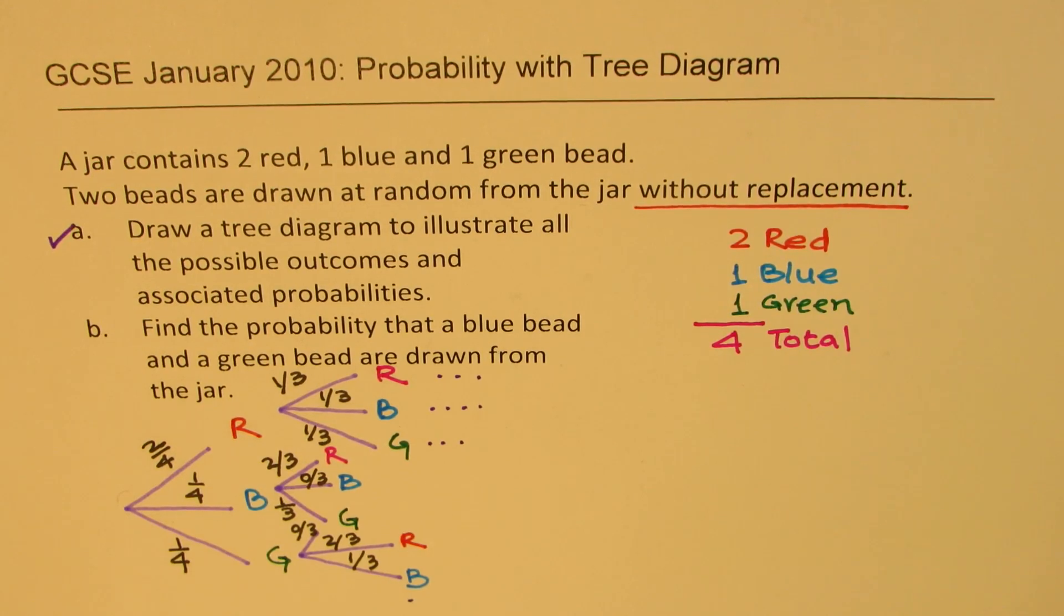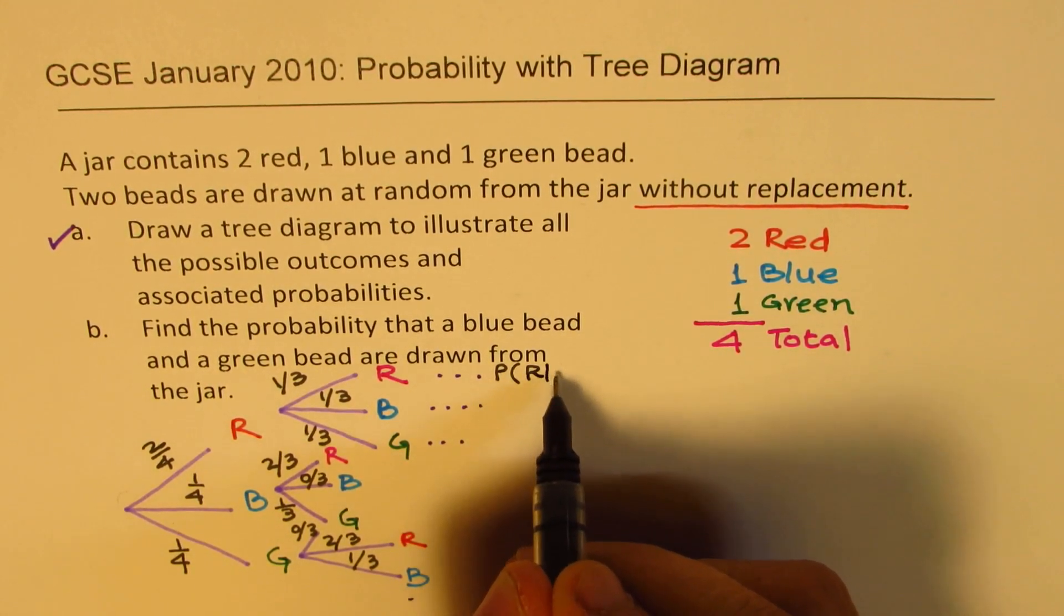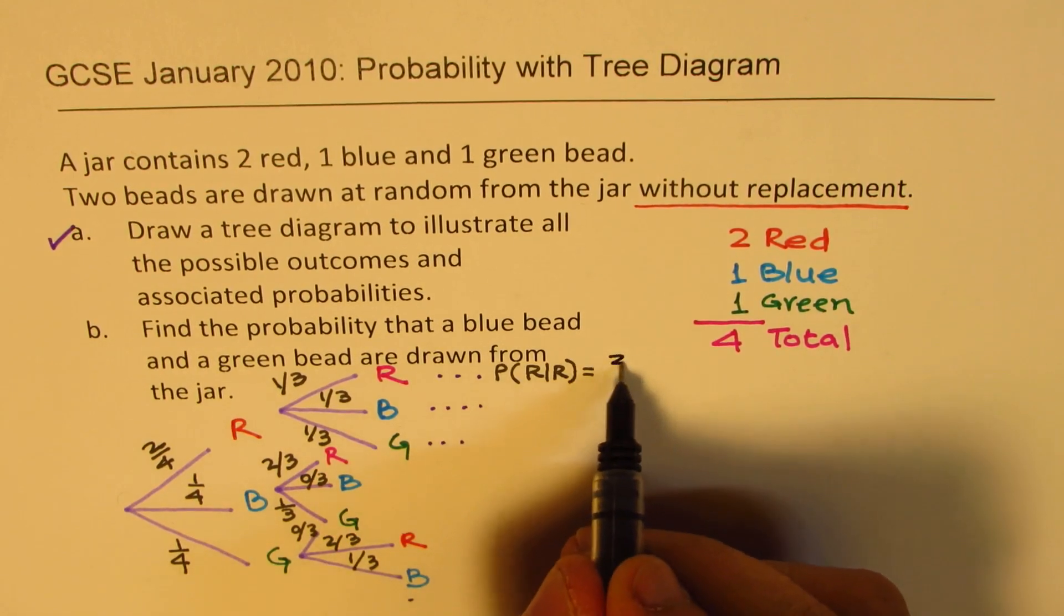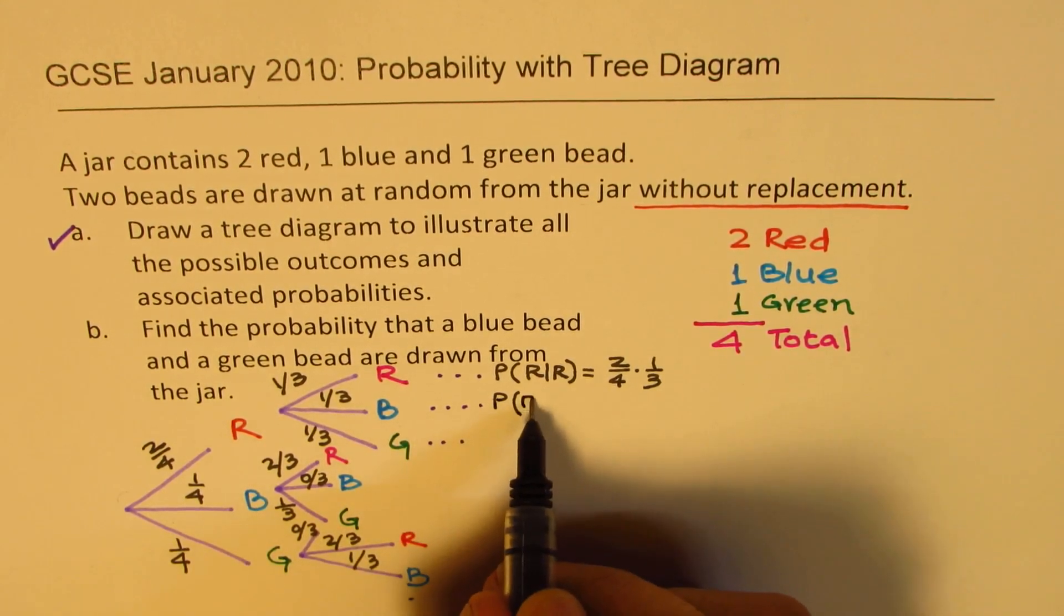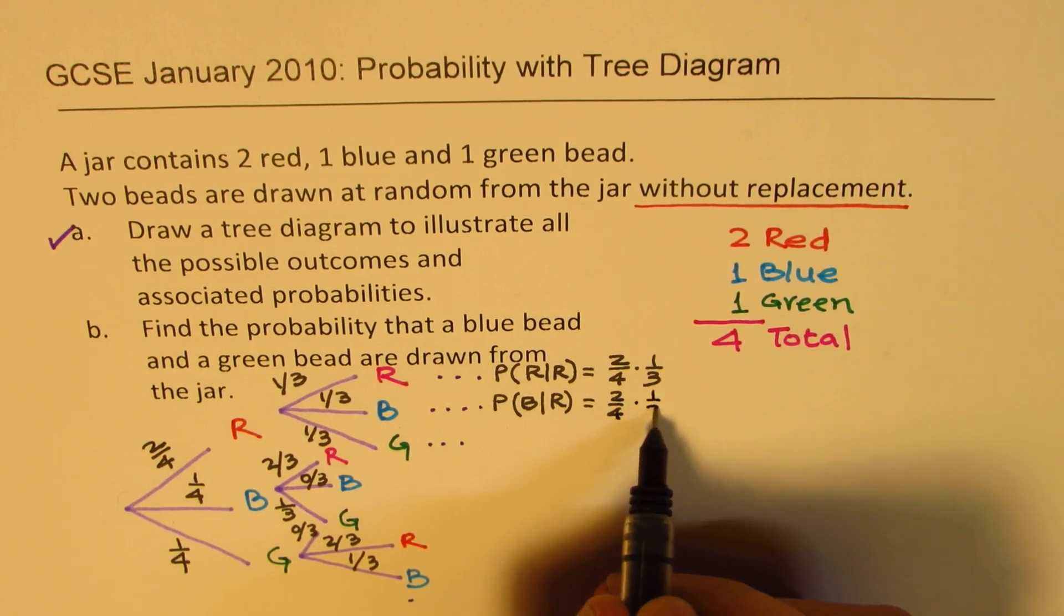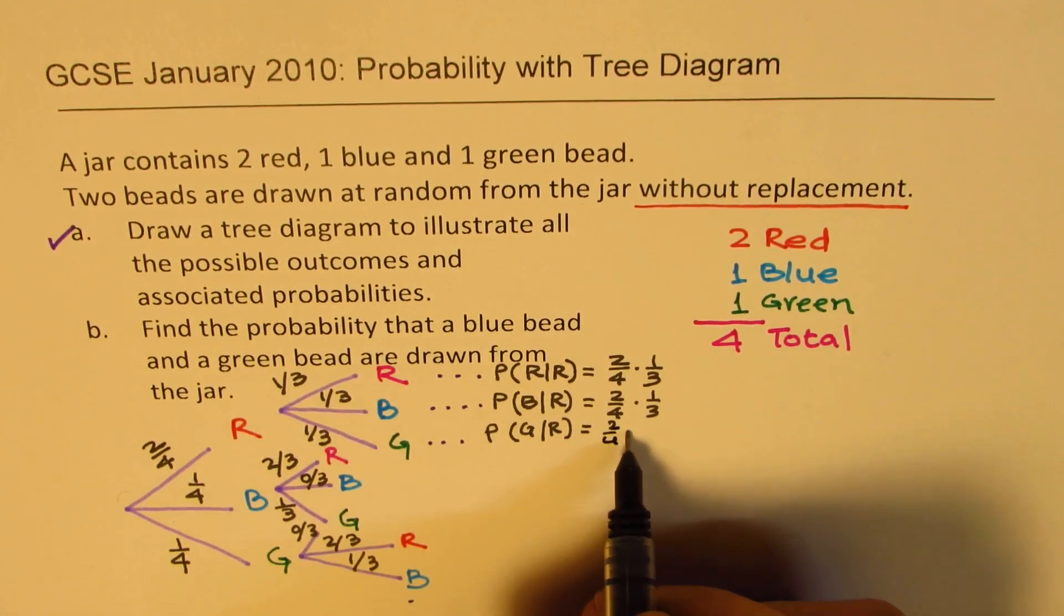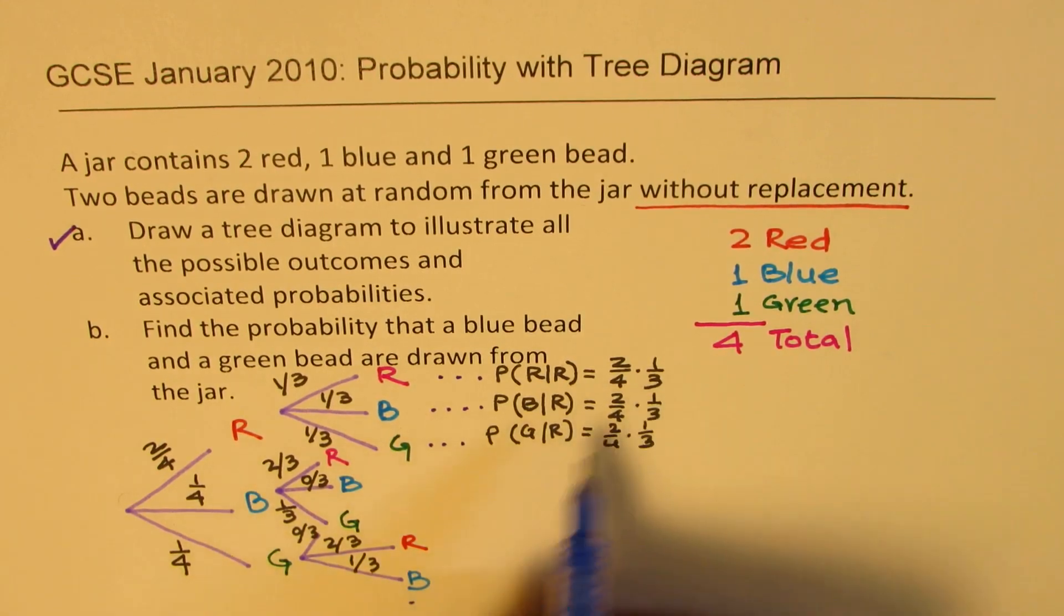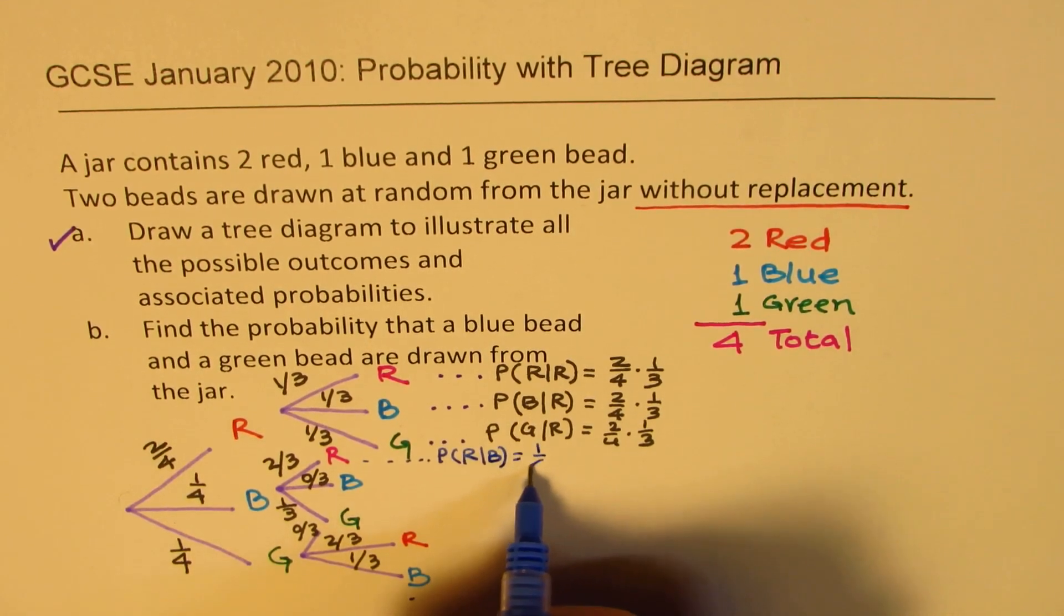What is the probability of getting red once we know we already had red? That's 2/4 times 1/3. Similarly, you can read the others. This is probability of blue when we know we already got red, so 2/4 times 1/3. In this case, it's probability of green when we know we got red earlier: 2/4 for the red and 1/3 for the green. Now, in this particular case, we're talking about probability of red when we know we got blue earlier: 1/4 times 2/3.